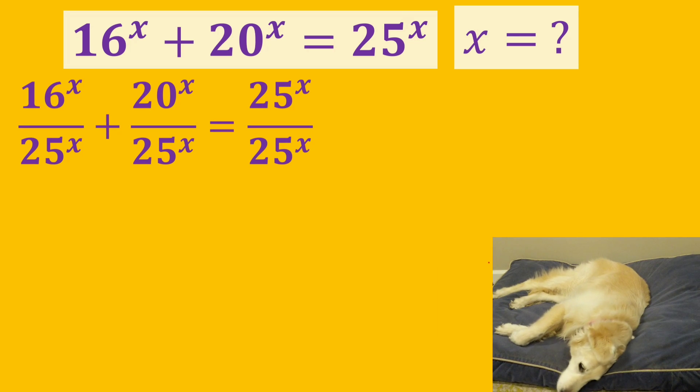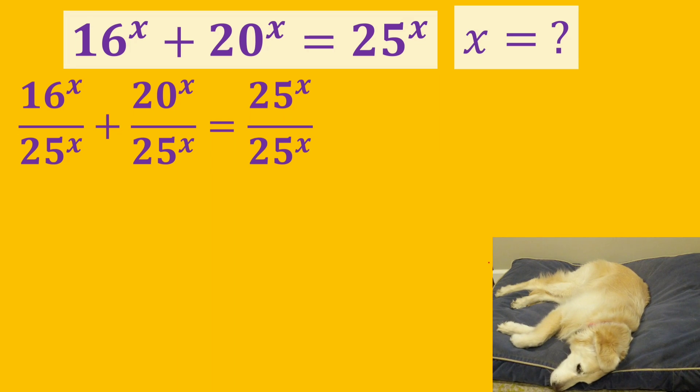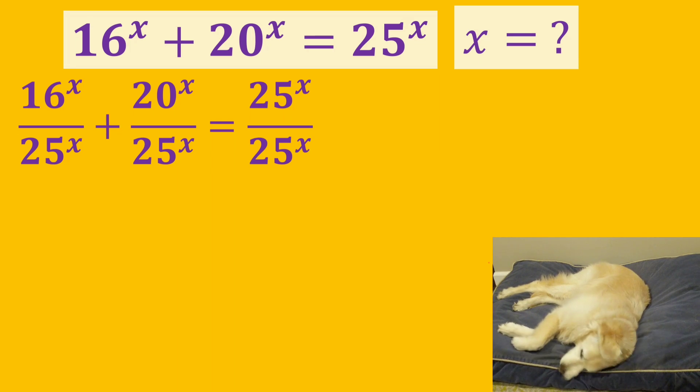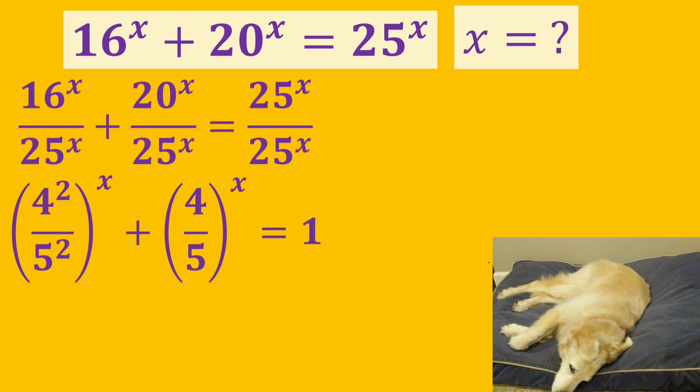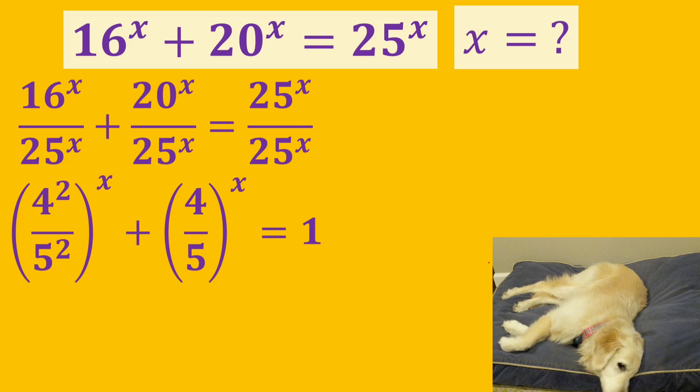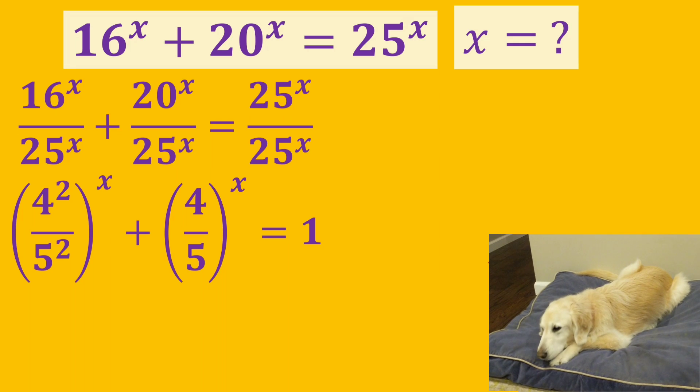We divide both sides of the equation by 25 to the power of x. We can rearrange the left side of the equation like this. We can write 4 squared over 5 squared instead of 16 over 25. And we can also write 4 over 5 instead of 20 over 25.